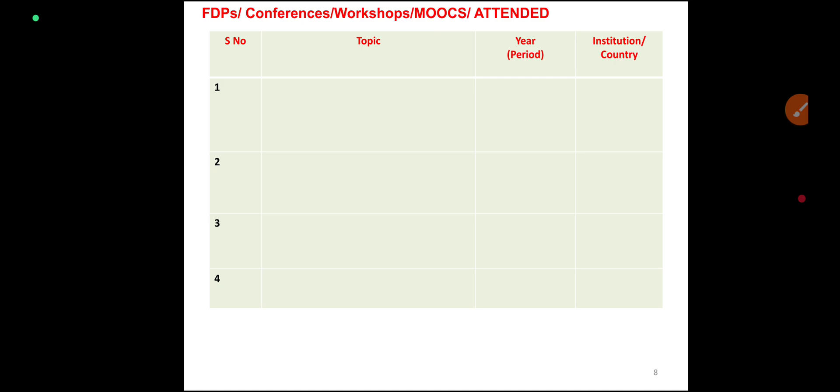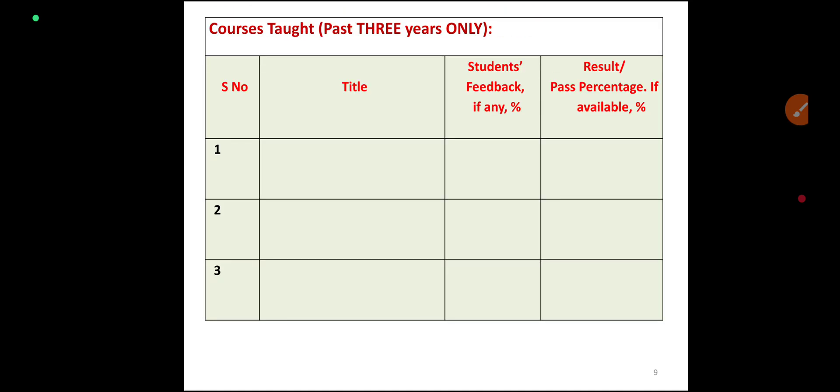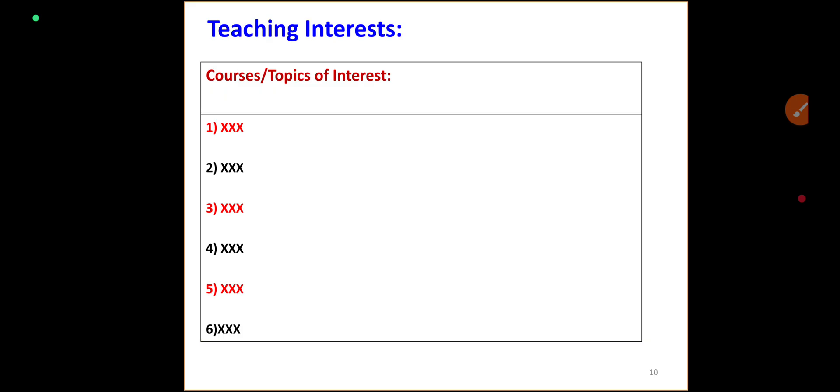The teaching section covers courses taught in the past 3 years — with title, student feedback, results, and pass percentage. You can use results if you have 80% input. Teaching interest is important here; you can see there are 6 topics of interest. You will choose subjects from the template — selecting 3, 2, 5, or 4 subjects accordingly.